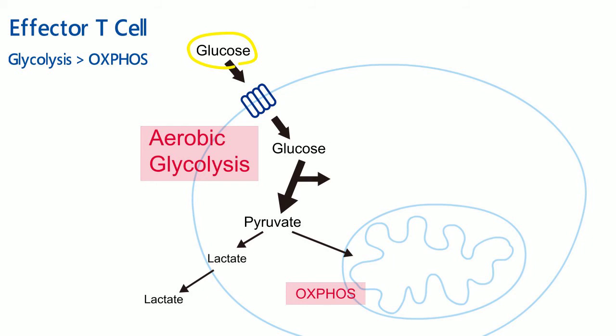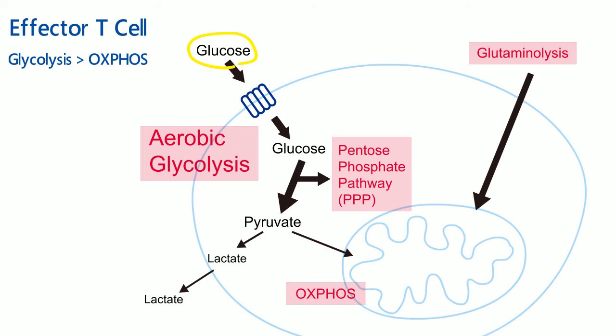For example, the glucose will undergo pentose phosphate pathway, or PPP, to produce nucleotides for DNA synthesis. Besides, effector T-cells adopt glutaminolysis, which results in lipid synthesis.